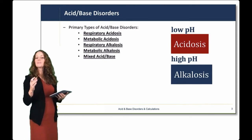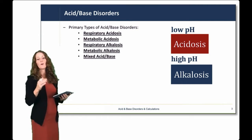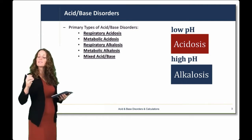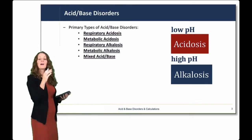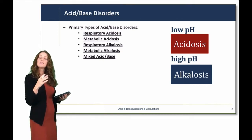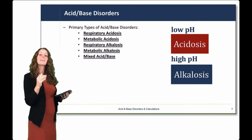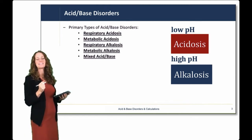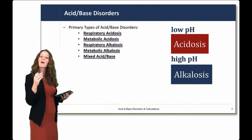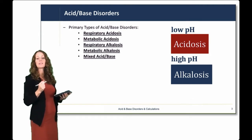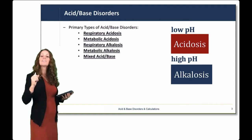The primary types of acid-base disorders are either respiratory cause, metabolic cause, or mixed. They are also either acidosis or alkalosis. In the previous lecture, we talked about how respiratory and renal mechanisms can compensate for the different acid-base conditions. Respiratory situations can also cause acid-base conditions, and non-respiratory acid and base load can cause a metabolic acidosis or alkalosis. A low pH is an acidosis, and a high pH is an alkalosis.